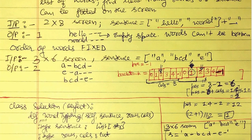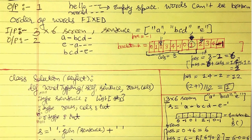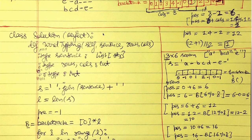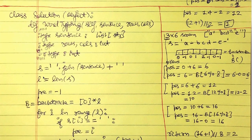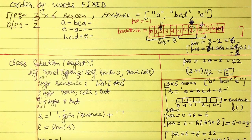An important observation: since there must be a space between two words and we write the sentence one after the other, we add one extra space to the end of the sentence. In Python, we join the sentence words with a space and append one more space at the end to form the new string `s`. This is the key preprocessing step.